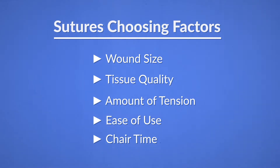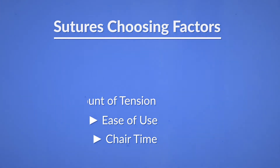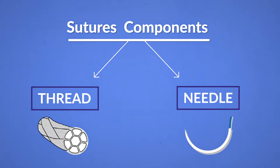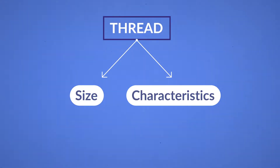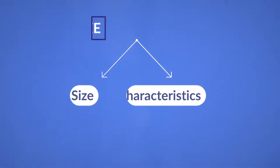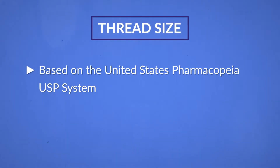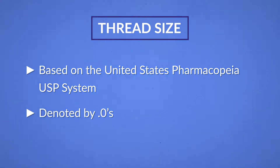The suture is made up of two parts: the thread and the needle. We will start with the thread. The thread can be described by either its size or its characteristics. The size is actually not based on diameter or width of the suture, but it is based on the United States Pharmacopeia or USP system and is denoted by .0s.